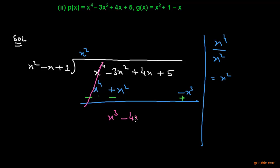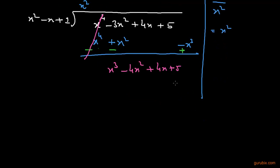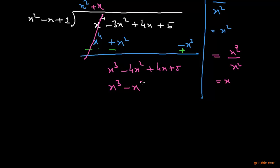To find the next term in the quotient, we divide x³ by x², giving x. We multiply x by the three terms of the divisor to get x³ - x² + x, then change the sign and subtract, leaving -3x² + 3x + 5.